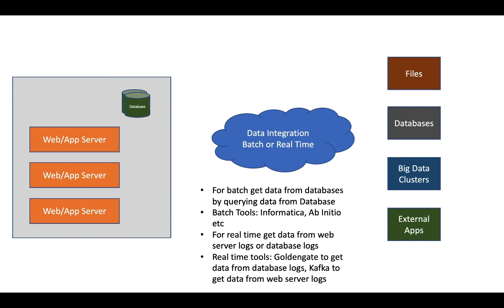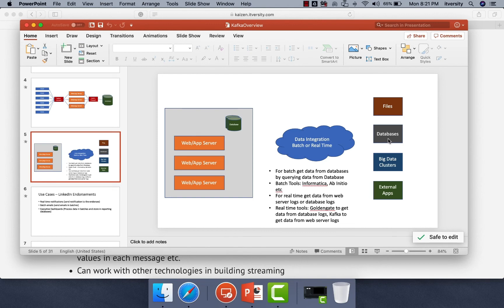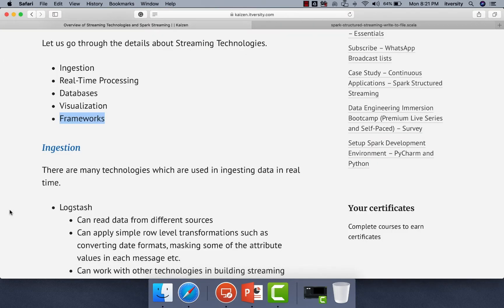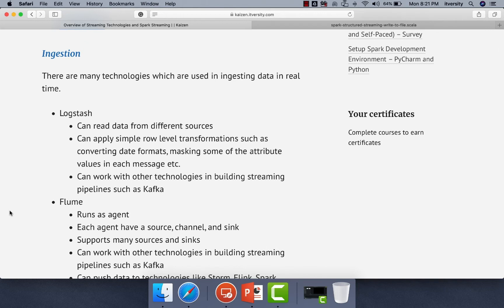This is how we typically get data within an enterprise from the source into the target. When it comes to streaming technologies, we typically get data in real-time predominantly from web or app server logs into the targets, going through all four steps: data ingestion, processing, storing data into databases, and visualizing on top of that data using custom solutions or out-of-the-box BI tools such as Tableau. Let's get into the details about what options we have at each layer.